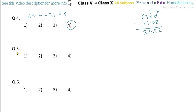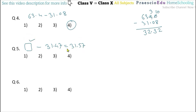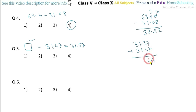Now question number 5: a box minus 31.47 equals 31.57. To find out this unknown number, we have to add these two numbers. So 31.57 plus 31.47: 7 plus 7 is 14, carry 1. Then 1 plus 4 plus 5 is 10, carry 1. Then 1 plus 1 plus 2 is a 3, and 3 plus 3 is 6. So the answer is 63.04, given in option number 3.